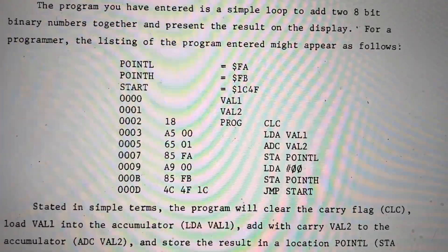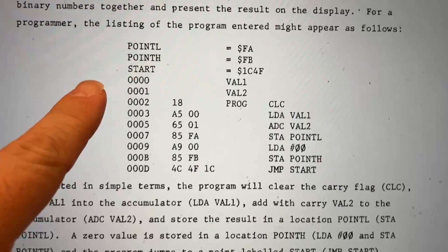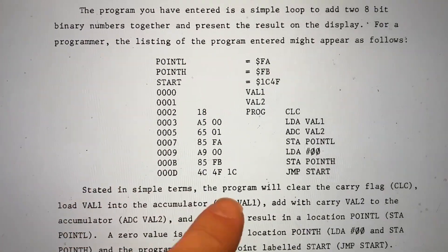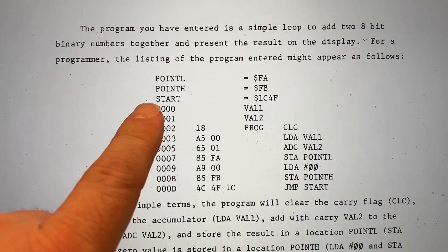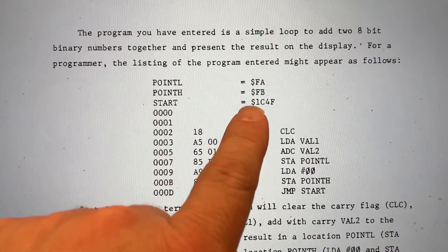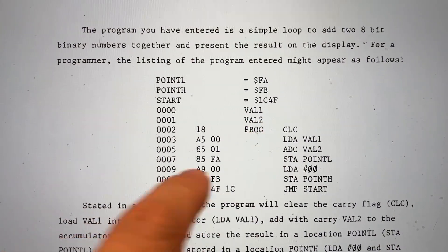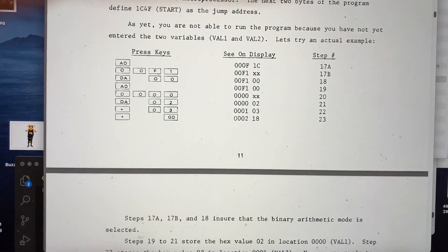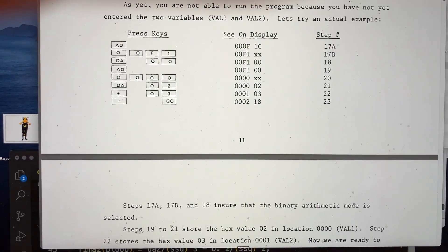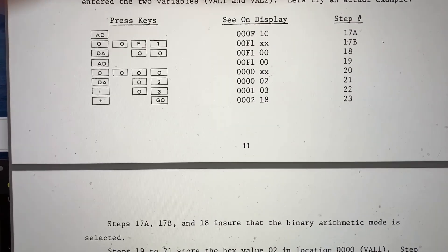Okay, and so this is the program. Start looks like it's a routine that displays numbers to the LED display. And it's going to display the numbers at FA and FB. And it adds these two numbers at 00 and 01. Okay, so apparently we need to make sure that binary arithmetic mode is selected.